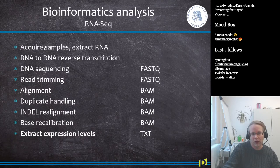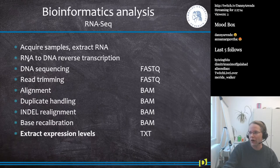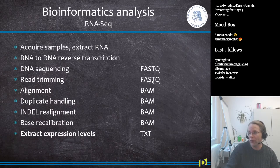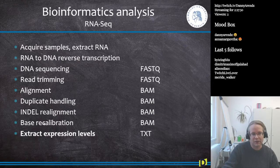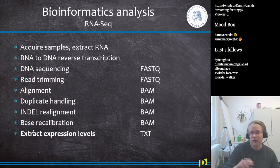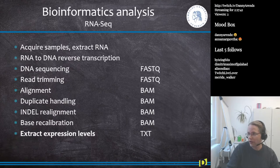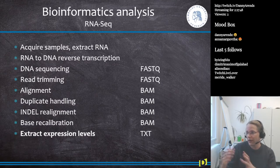The RNA-seq analysis workflow is straightforward: acquire samples, extract RNA, transform RNA into cDNA via reverse transcriptase, then perform DNA sequencing to get a FASTQ file. We trim reads to remove bad base pairs, then do alignment, duplicate handling, indel realignment, and base recalibration. The main difference in bioinformatics analysis comes at the end — instead of looking for SNPs, we count how many reads map to each gene to determine expression levels.